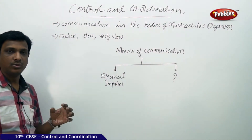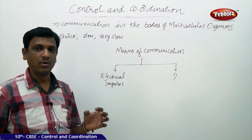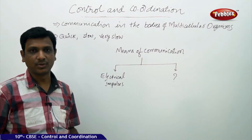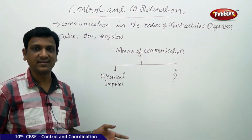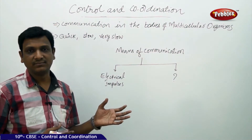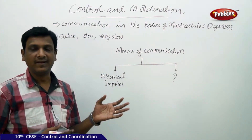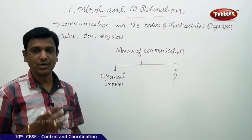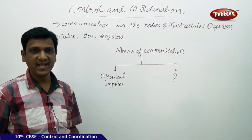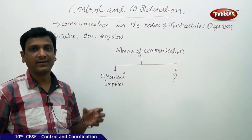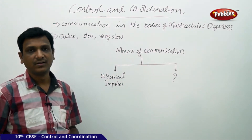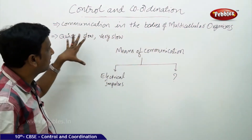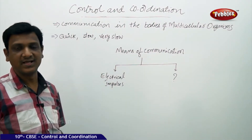We have seen how information about a stimulus is communicated and transferred to different parts, how it is processed, and how responses are produced in animals as well as in plants. In animals, information is carried in the form of electrical impulses in nervous tissue, whereas in plants there is no nervous tissue — instead, electrochemical or chemical messengers carry the information. Let us look once again at how communication is done in the bodies of multicellular organisms, in both plants and animals.